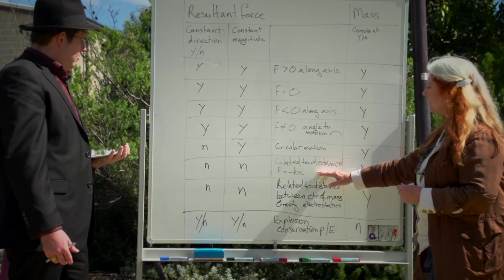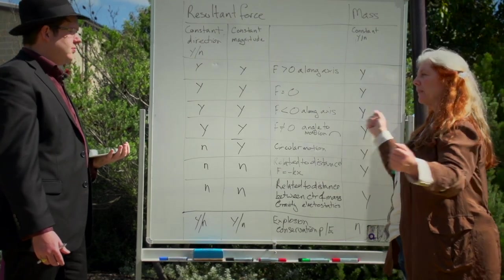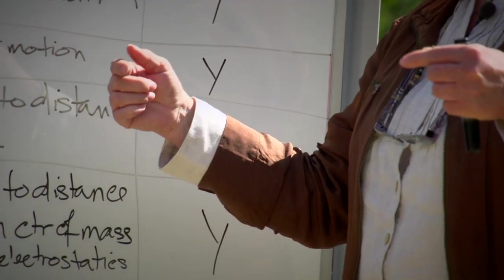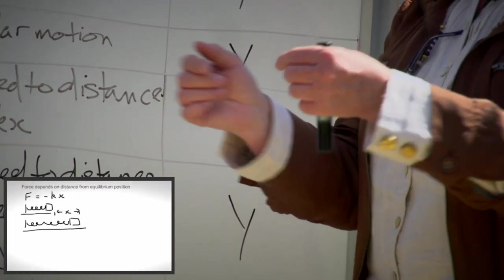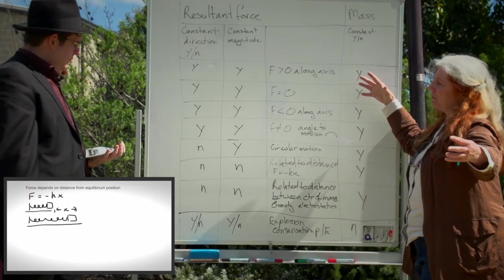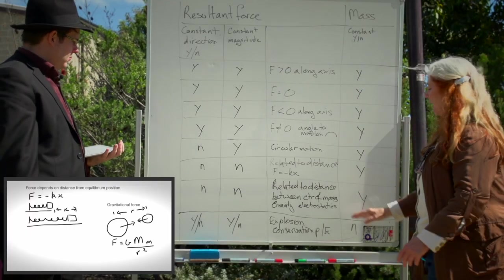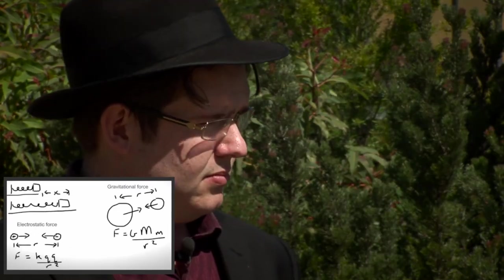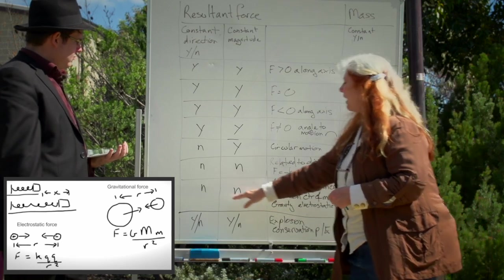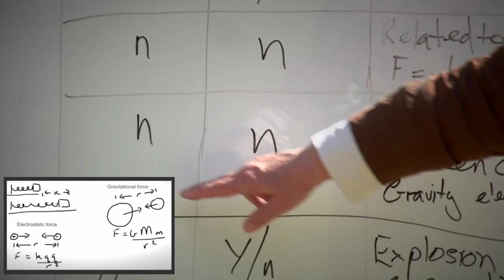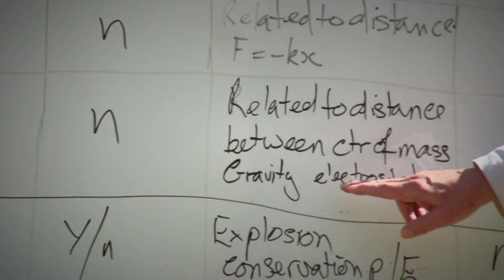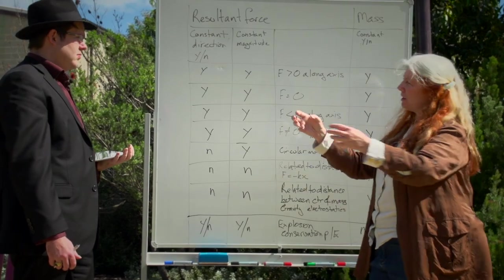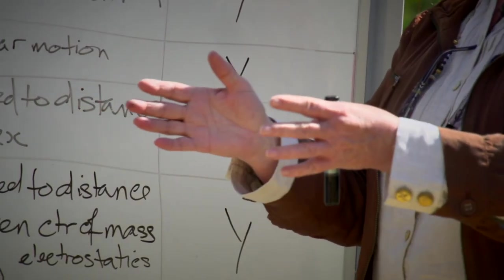Changing accelerations. Yes and that would be like when you have a spring. The further you pull it away from its origin the harder the force is. What about when you have two objects that are being pulled together just like you're being pulled to the ground now? That strength of that force depends upon the distance between the objects. So it's not got a constant direction because the objects can be moving but it's always between the two objects and it may not have a constant magnitude because it depends on how far away they are from each other.